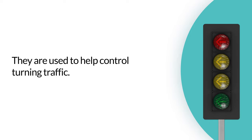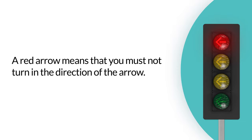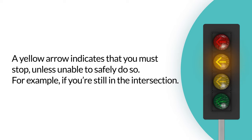Let's move on to traffic signals with arrows, which are used to help control turning traffic. The first arrow you should know is the red arrow — a red arrow means that you must not turn in the direction of the arrow; wait for a green signal to appear before you turn. A yellow arrow indicates that you must stop unless unable to safely do so, for example if you're still in the intersection.